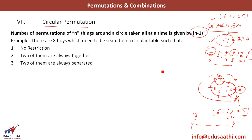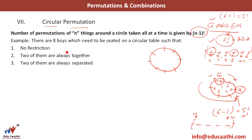There are eight boys which need to be seated on a circular table. I draw a circle here and eight chairs. Such that there is no restriction, the answer to the first case is very simple: 8 minus 1, which is 7 factorial.